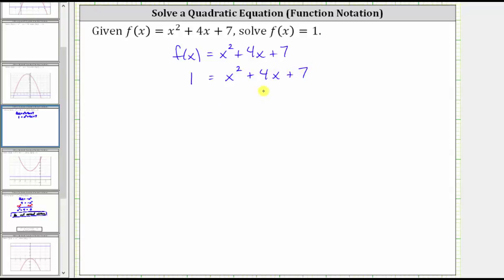Let's see if we can solve this equation by factoring. We first need to set the equation equal to zero. Looking at the left side, let's set the left side equal to zero by subtracting one on both sides of the equation.